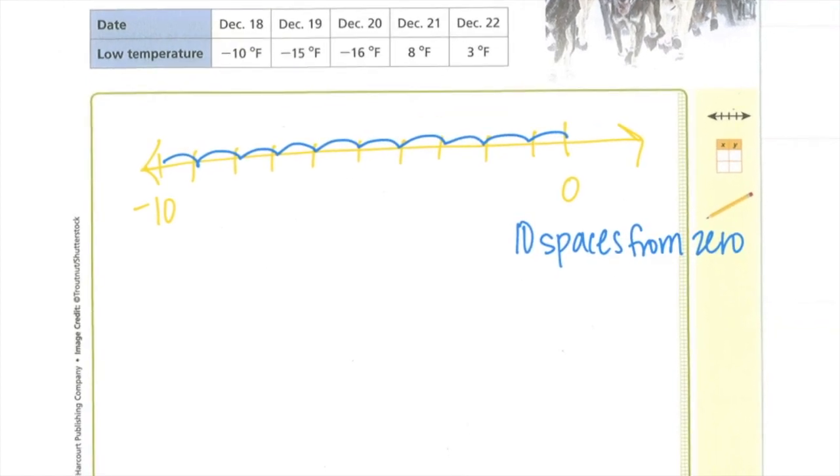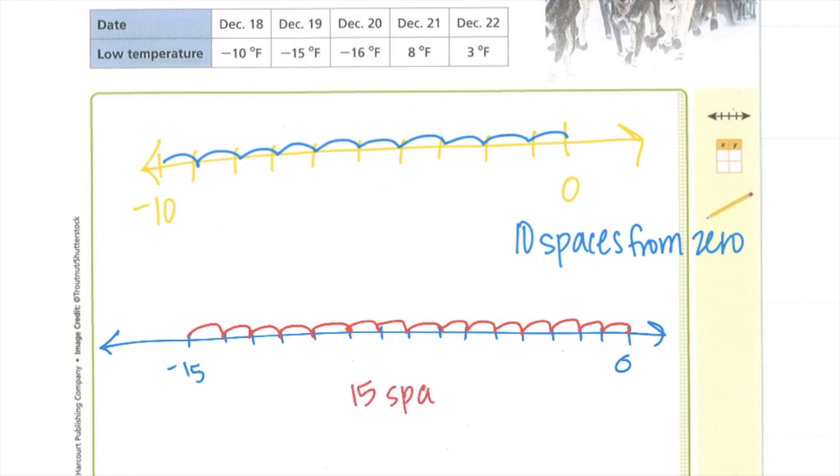And then I could do negative 15 the same way. Put 0 here, 1, 2, 3, 4, 5, 6, 7, 8, 9, 10, 11, 12, 13, 14, 15. And if I count the distance, how many spaces? 1, 2, 3, 4, 5, 6, 7, 8, 9, 10, 11, 12, 13, 14, 15. So that one's 15 spaces from 0.